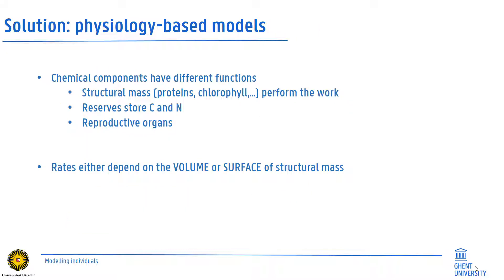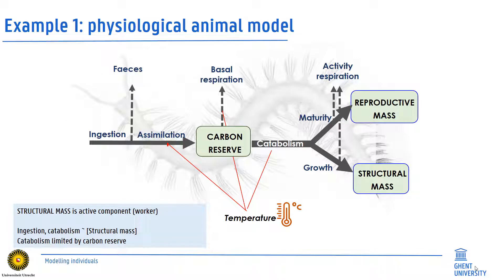It is important to consider that different vital functions rely on different chemical architectures. Structural mass is the basis for organismal functioning. Reserve organs store carbon and nitrogen, while energy can be allocated to reproductive organs depending on time and environment. Rates will therefore always be dependent on the volume or surface of the structural mass. Such physiology-based models include the assimilation of carbon by ingestion, and the catabolism by which energy stocks fuel reproduction and the further accumulation of structural mass during growth. Carbon gets lost by respiration, and all processes are known to be temperature-dependent.